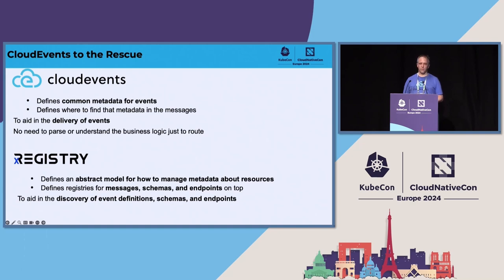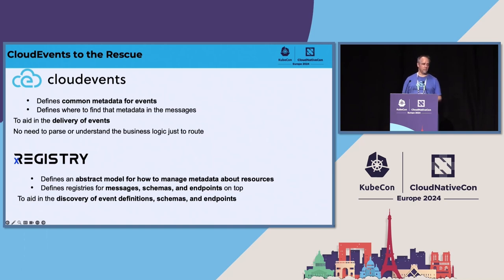The most recent initiative we have is X-Registry. Here we aim at making events discoverable. You can browse a registry and find event definitions, the descriptions, and how events are transmitted. You can browse for schemas as well, and even endpoints — where can you consume or send events, where can you subscribe to events. And this X-Registry is extensible; the X stands for extensible. So it can even be extended to further kinds of metadata.